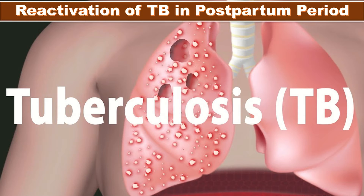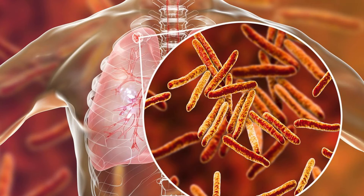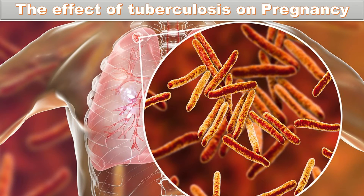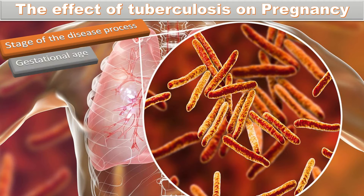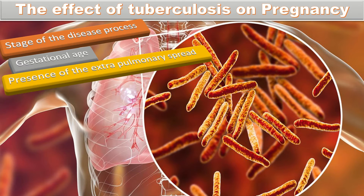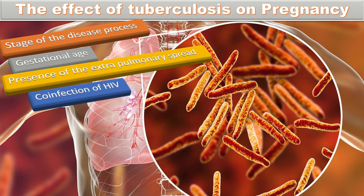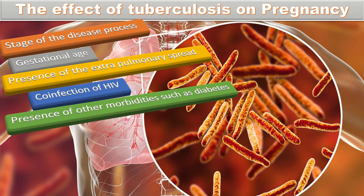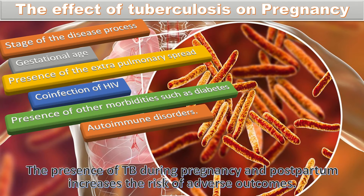Pregnancy is affected by tuberculosis, and maternal and neonatal outcomes depend on the stage of the disease process, the gestational age at diagnosis, the treatment received, the presence of extra-pulmonary spread, co-infection with HIV, and the presence of other comorbidities such as diabetes and autoimmune disease.